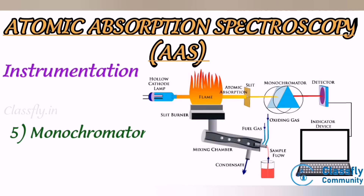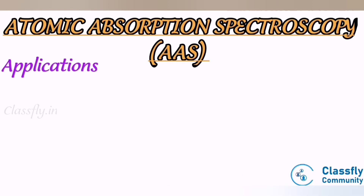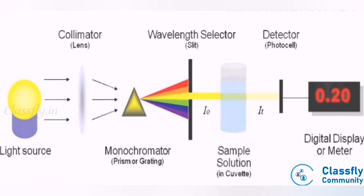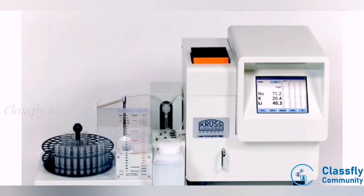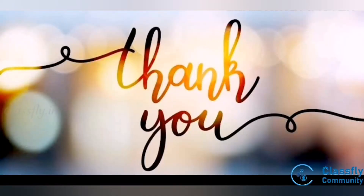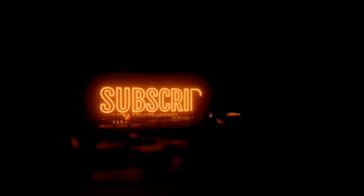Applications of AAS: determination of even small amounts of metals such as lead, mercury, calcium, and magnesium. Application areas include: first, environmental studies — drinking water, ocean water, and soil; second, the food industry; and third, the pharmaceutical industry. These are the topics regarding colorimetry, flame photometry and atomic absorption spectroscopy.